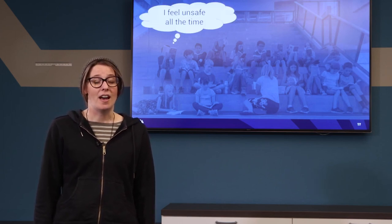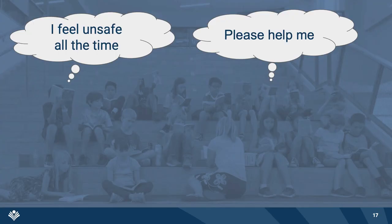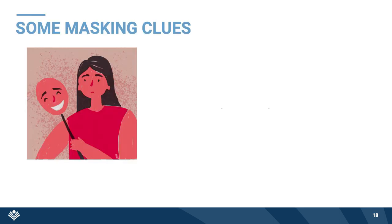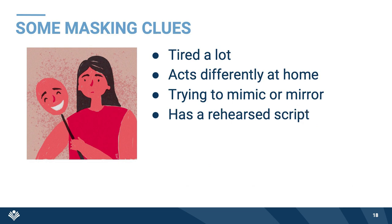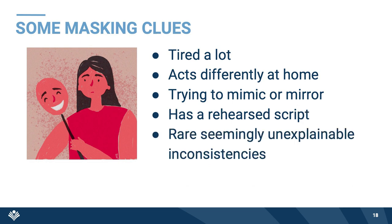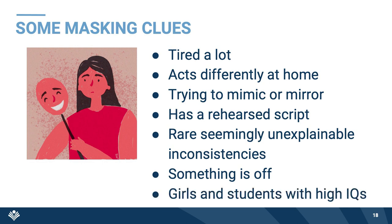I bet there are students in your school whom you do not realize are masking every single day. And what you can't hear them saying is: I feel unsafe all the time. Please help me. So how can we help them? How can we tell if someone is masking? Sometimes you can't. But here are some clues: if a student seems tired a lot of the time, acts significantly different at home than at school, seems to be trying to mimic or near other students, seems to have a rehearsed script for situations, seems very consistent except for rare seemingly unexplainable exceptions, or if something is off and you can't quite put your finger on it. And keep an eye out specifically for girls and students with high IQs — on average, we mask more often and we mask more effectively.